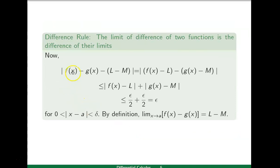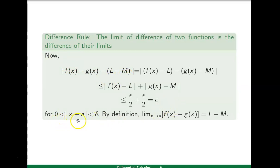We want to prove that limit of f(x)−g(x) equals l−m. Starting from |f(x)−g(x)−(l−m)|, taking f(x)−l in one bracket and g(x)−m in a second bracket, and applying the triangular inequality, we obtain this is less than or equal to |f(x)−l| plus |g(x)−m|. Since each is less than epsilon/2 for zero less than |x−a| less than delta, we get |f(x)−g(x)−(l−m)| less than epsilon. Therefore by epsilon-delta definition, limit x tends to a of f(x)−g(x) equals l−m.